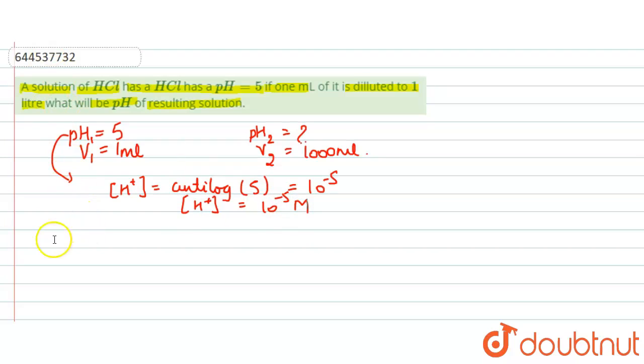After this we know that M1V1 is equal to M2V2. So M1 is the concentration of H positive ions, the molarity that is 10 raised to power minus 5, V1 was 1 ml, and M2 we have to find. V2 is 1000 ml.